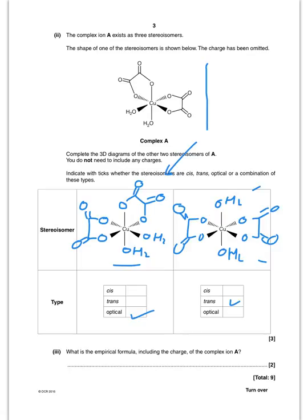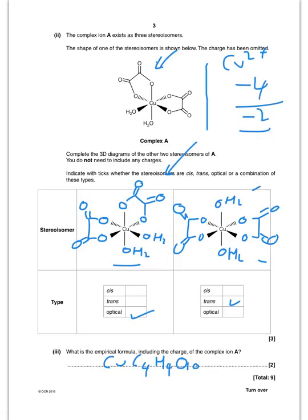This is a counting exercise. If you count up you've got one copper, four carbons, four hydrogens, and ten oxygens. The charge on the copper is 2+, and each of these bidentate ligands is 2 minus, so you've got 4 minus overall, giving an overall charge of 2 minus. Put square brackets and then 2 minus.